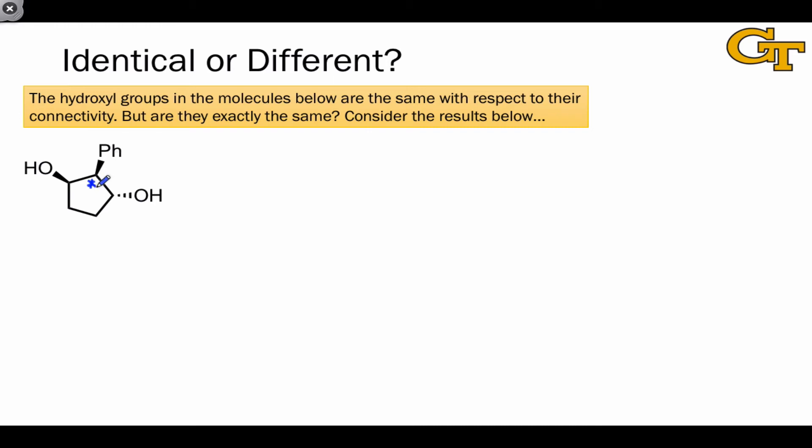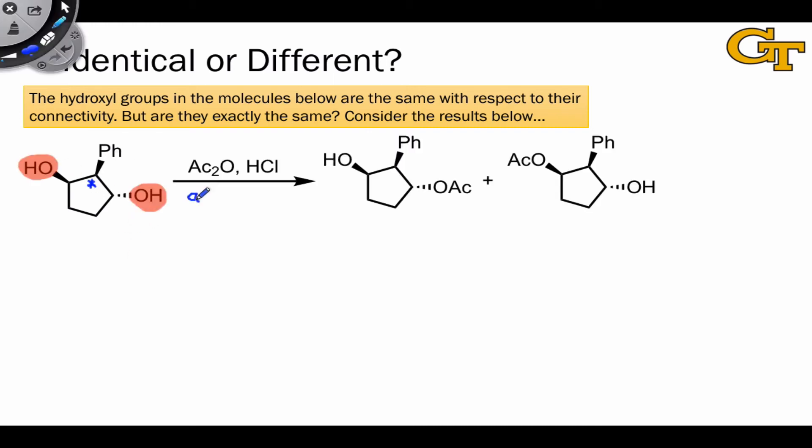In this third case, I've placed a stereocenter between the two hydroxyls in a trans relationship. Now, treatment of this compound with the achiral reaction conditions leads to two possible products that are diastereomers, since the configuration of this central stereocenter is unchanged by the reaction. As we've seen previously, we should expect the yields and stabilities of these two diastereomers to be different. So we should expect different yields here. And this is what's observed.